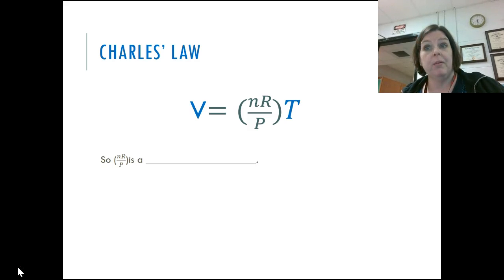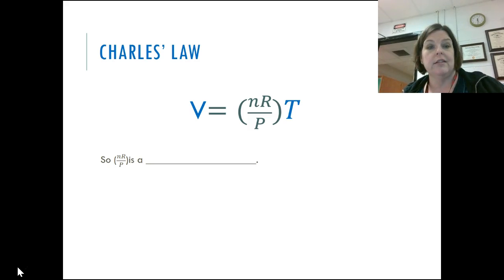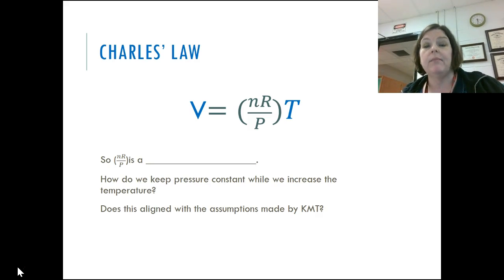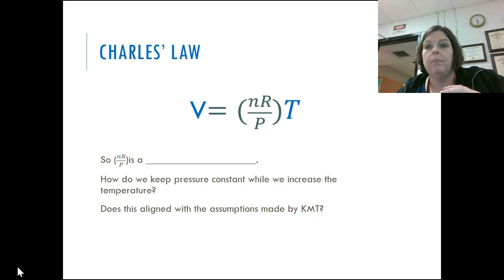NR over P — where pressure is kept constant and the number of moles are kept constant — is a constant. Does volume get bigger when temperature gets bigger? Yes. If the container is flexible, then as temperature increases, the container expands to accommodate the increasing collisions without increasing pressure. To keep pressure constant while increasing temperature, we need a flexible container that can expand. This aligns with our assumptions: if the container expands, the collisions produce greater volume rather than greater pressure.